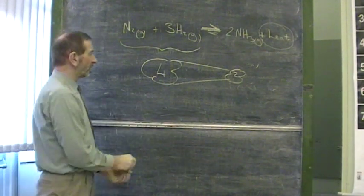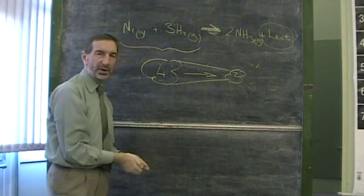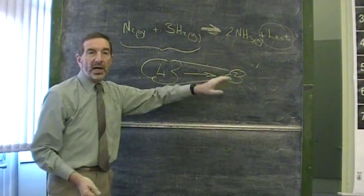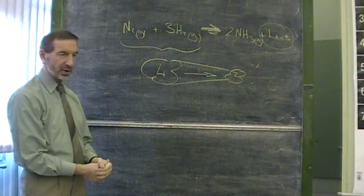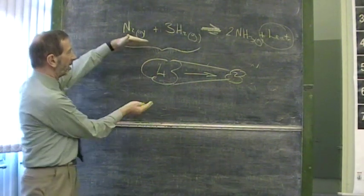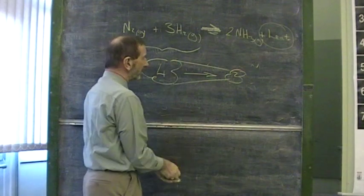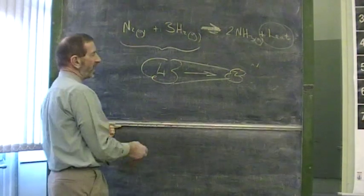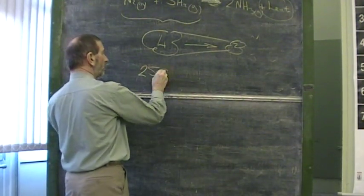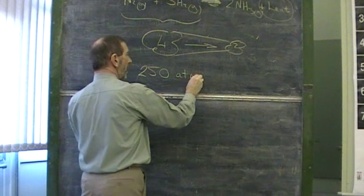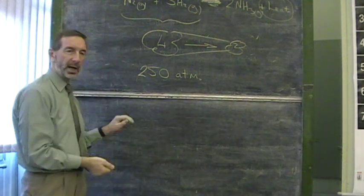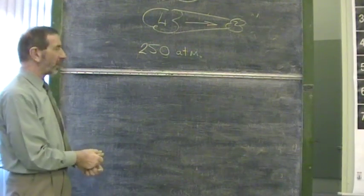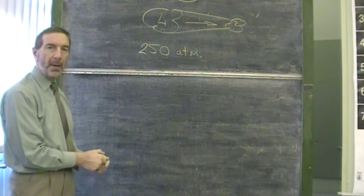How can we encourage the reaction to shift to the right? How can we encourage a decrease in volume? And the answer is simply increase the pressure. If we increase the pressure using a high pressure, that will encourage the gases to take up a smaller volume. And therefore, the Haber process is carried out at high pressures. It's carried out at very high pressures. The pressure is something like 250 atmospheres. It's hard to visualize how high a pressure that is, but that equates to something like one and a half tons per square inch.